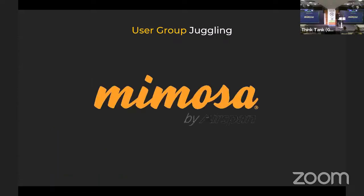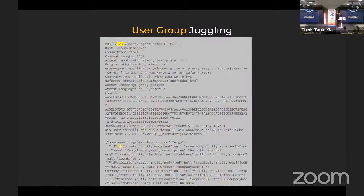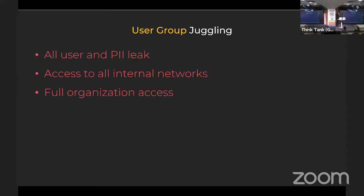Mimosa — a 5G antenna company whose equipment is used especially at certain military installations, so a nice target. In a POST to /users/registration, this was the user group — register a user to another group and you end up with access to all users, PII leakage, access to all internal networks, and full organization access. They were selling military equipment.